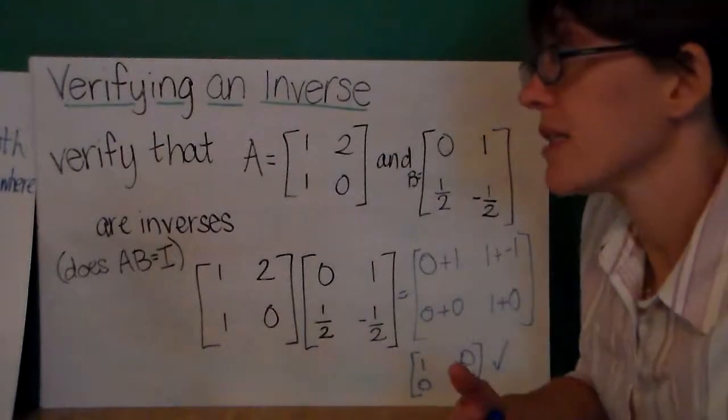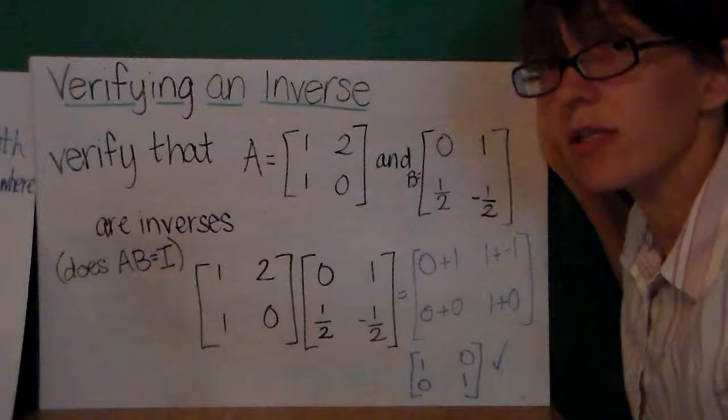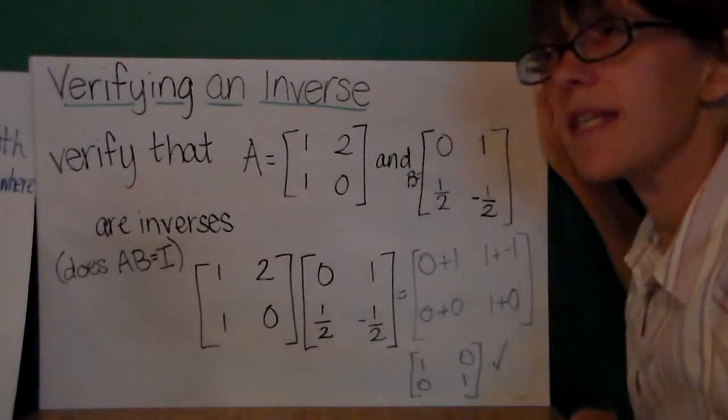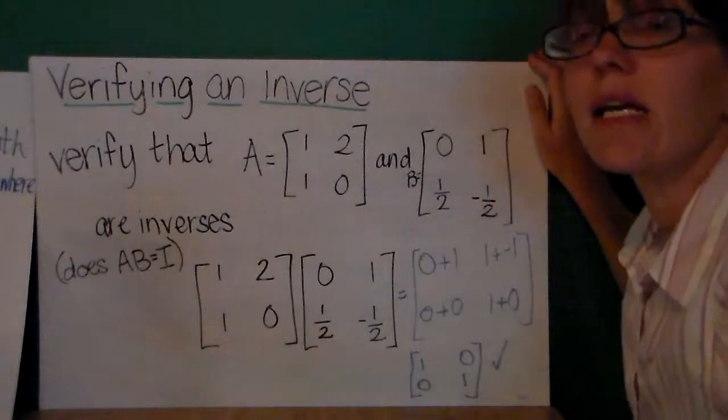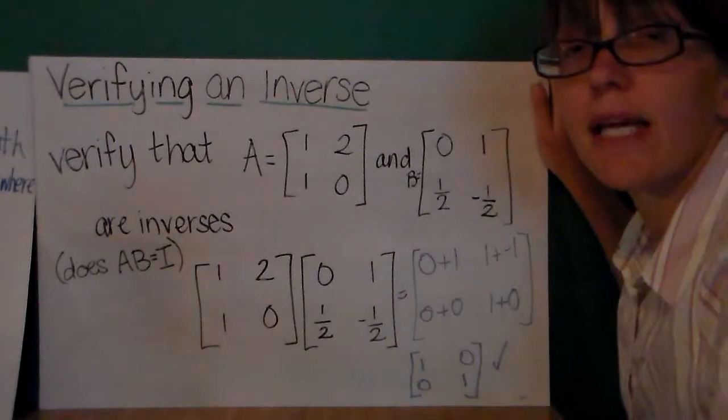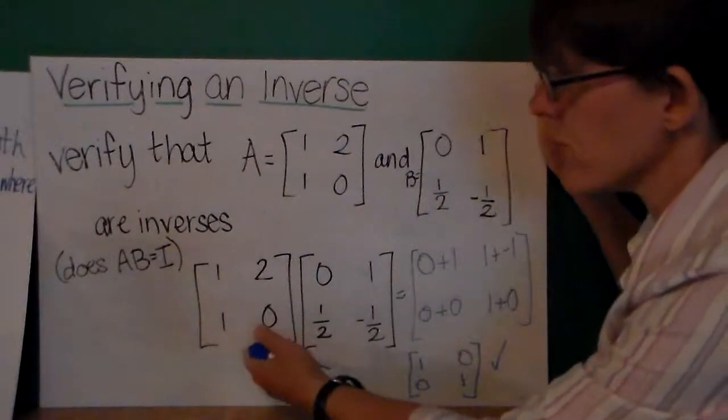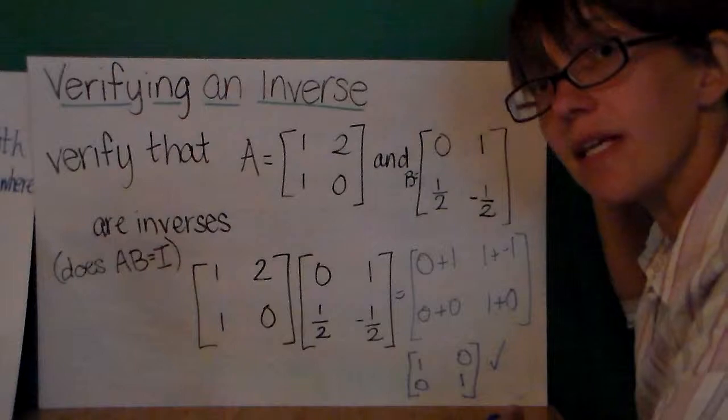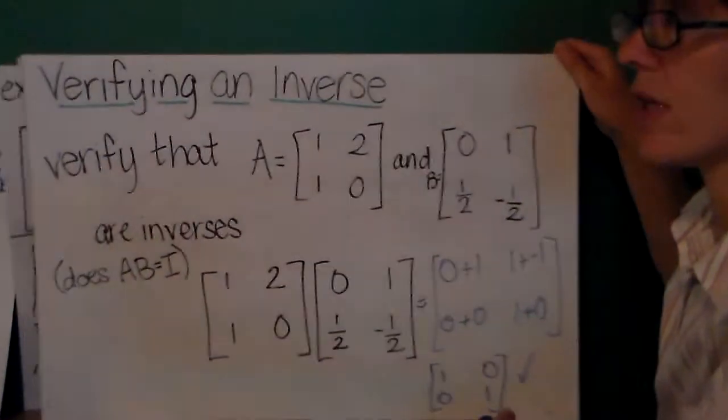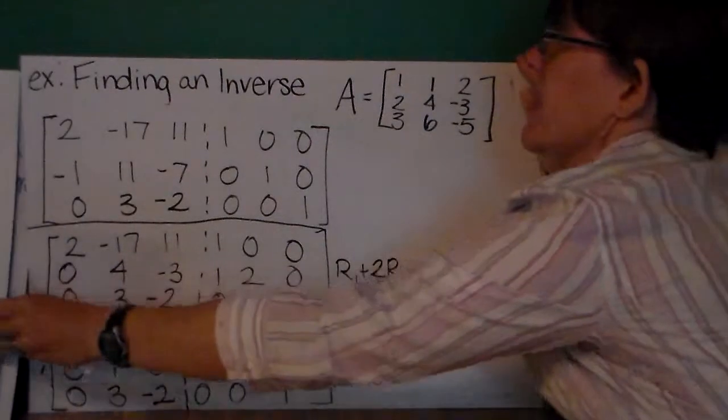Now, I hope at least somebody is out there saying, Mrs. Ofton, you told us matrix multiplication is not commutative. Well, it turns out that if the two matrices are inverses, then the multiplication is commutative. The order does not matter. And I encourage you to try multiplying B times A and see if you get the identity matrix again. I'm not going to do that here.